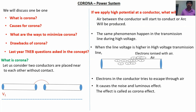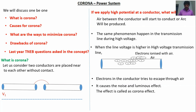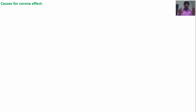Some electrons ionize with air, and at this time some noise and luminous effect happens. That effect is called corona effect. In the transmission line, when we apply high voltage, the high voltage means high pressure on the electrons. When pressure on the electrons is higher, the electrons in the conductor try to escape from the conductor to air. At that time, some noise and brightness — a luminous effect — will happen. This is the corona effect.